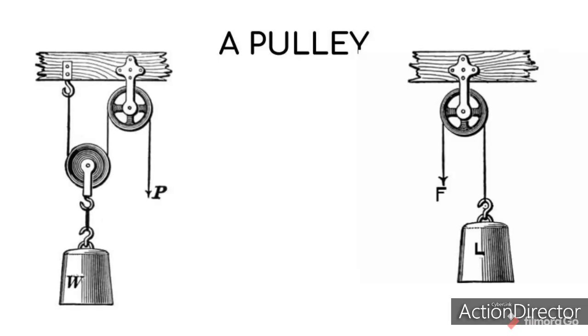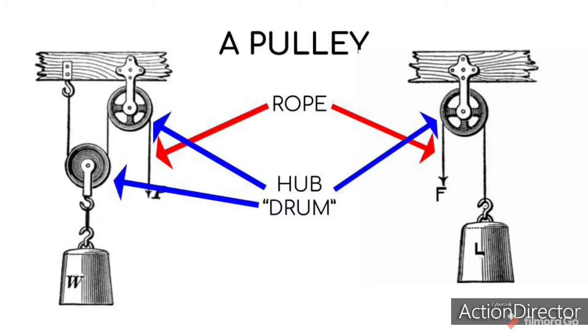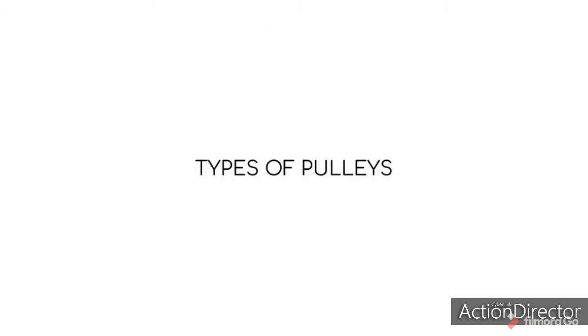A pulley is a simple machine that consists of a rope and a hub or drum in which there is a grooved wheel mounted with an axle. The pulley has a wide range of applications in many circumstances and can be used to make a variety of moving and lifting tasks easier. There are three main types of pulleys.